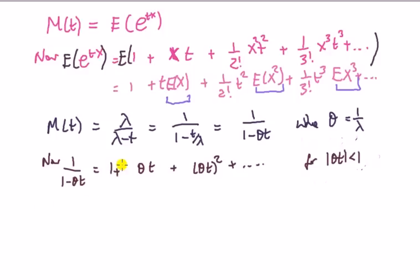Now compare this MGF of the exponential to the general expression for an MGF. By comparing coefficients, I can say immediately: this guy here is E(X) = θ = 1/λ. That's something we've shown already. The second moment should be around here.